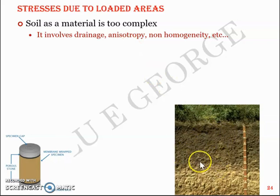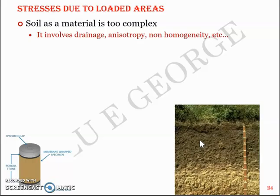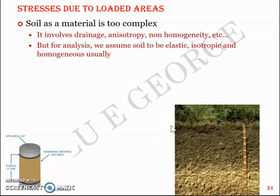As you can see from this picture, there are different layers and different types of soil. Even if you dig a hole in the ground, you'll see that each centimeter will house different kinds of soil in terms of its texture, its color, etc. So soil is actually a complex material compared to any other construction material — for instance, steel or to a certain extent concrete. But for analysis, we assume that soil is elastic, isotropic, and homogeneous.